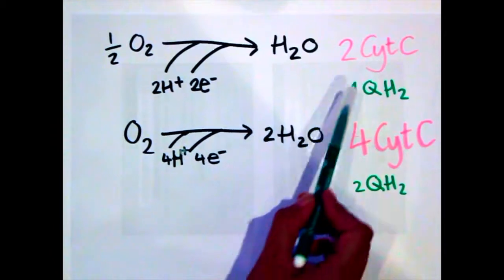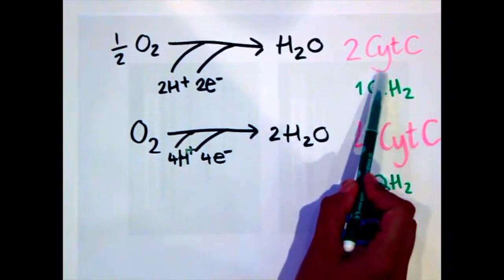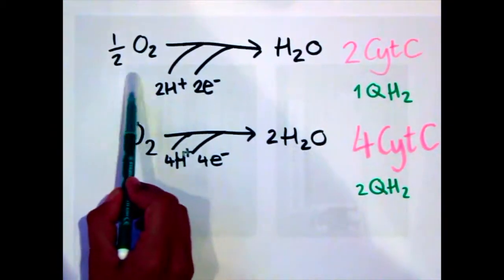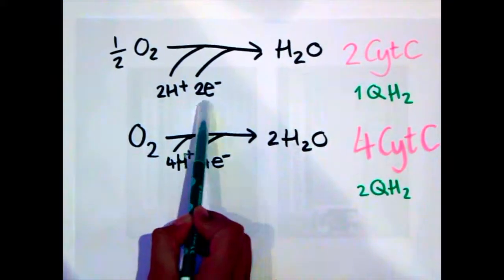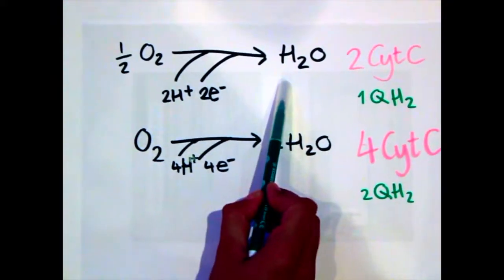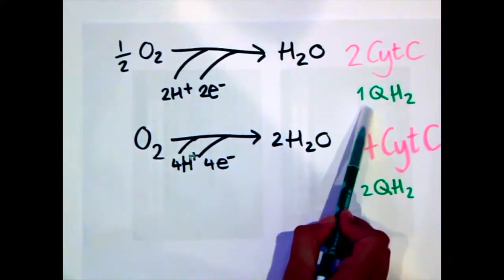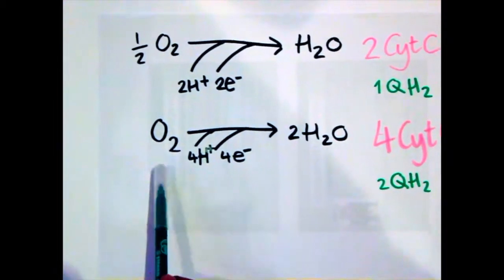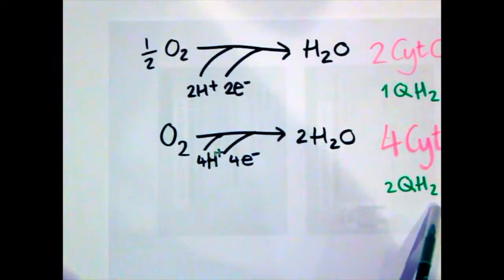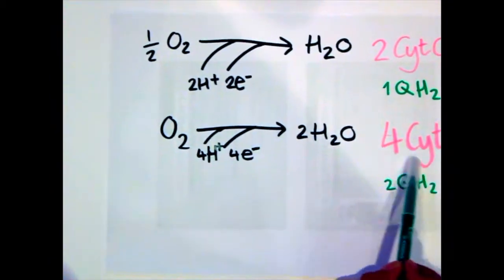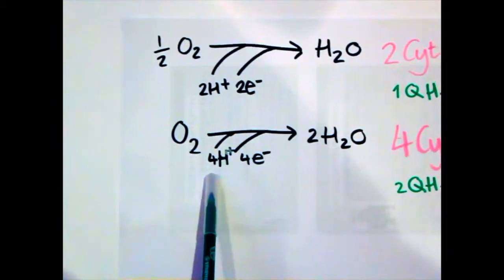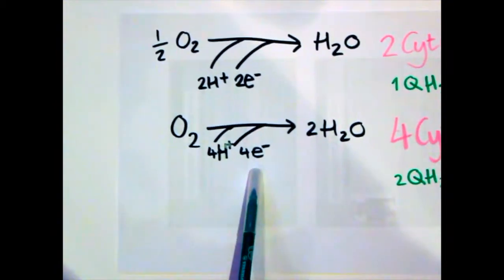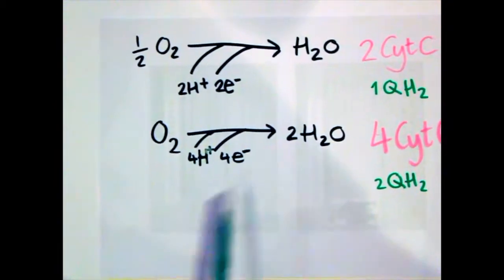So in this video, we have used 2 cytochrome C. In this way, we have only used half an oxygen, which with 2 protons and 2 electrons yields 1 water molecule. Remember that from 1 QH2, you get 2 reduced cytochrome C's. But in reality, to get a full oxygen molecule, you need 2 QH2s and 4 reduced cytochrome C's. Therefore, with the use of 4 protons and 4 electrons, you will get 2 water molecules.